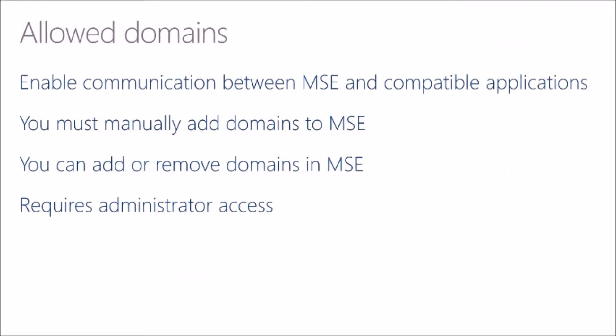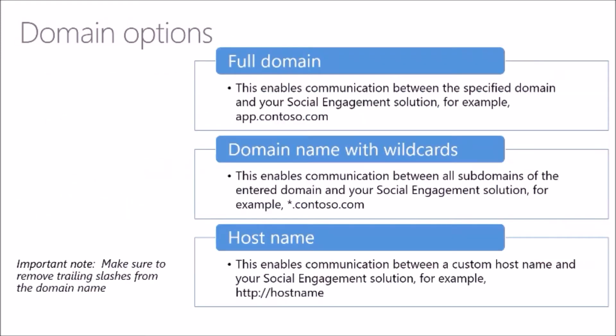To enable communication between Dynamics 365 and Microsoft Social Engagement, you need to allow the connection — it is separate but similar to connecting processes between Dynamics 365 and other compatible applications. We have the concept of allowed domains, which enables communication between MSE and compatible applications. You will have to manually add the domains to social engagement, and you can add or remove these domains once you're in there. This requires administrator access in the social engagement application. You can do the full domain, the domain with wildcards, or the host name. Make sure to remove any trailing slashes from the domain name so you get the behavior you desire.